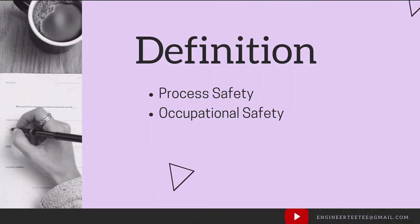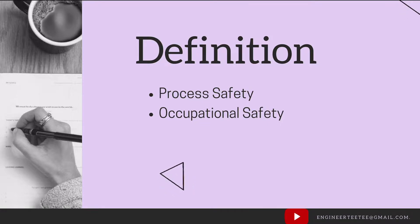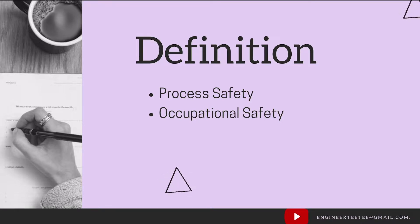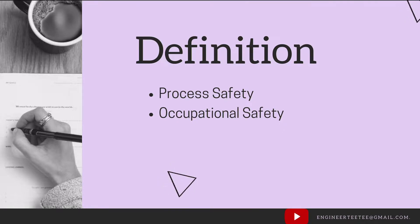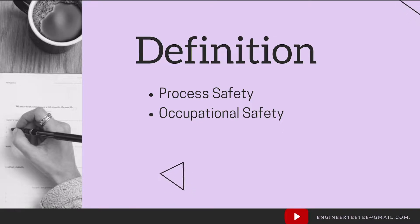First, the definition of process safety. According to the Center for Chemical Process Safety, it's defined as a disciplined framework for managing the integrity of operating systems and processes handling hazardous substances. We do this by applying good design principles, engineering and operating practices. Process safety focuses on efforts to reduce the risks associated with processes that handle hazardous materials and energies.